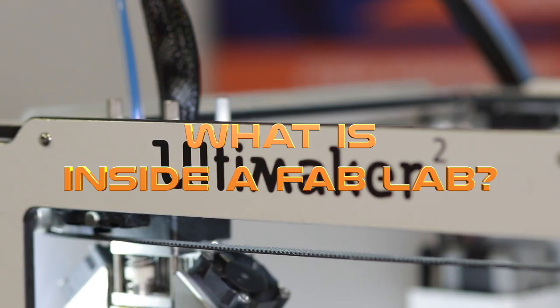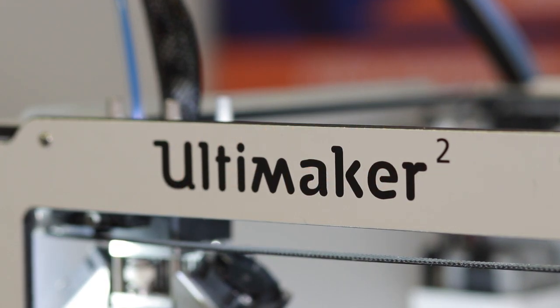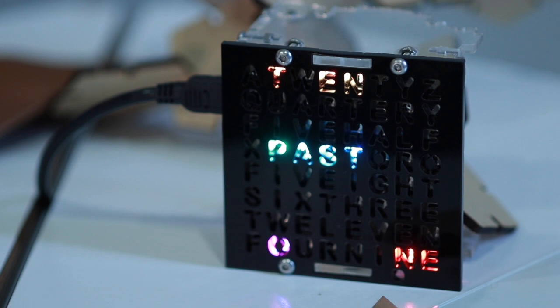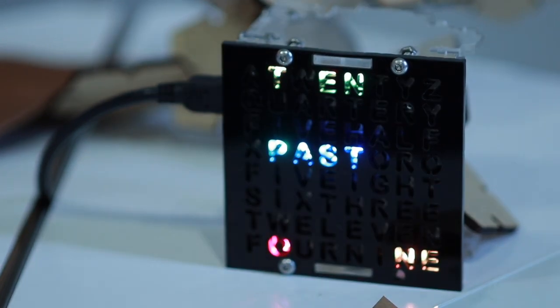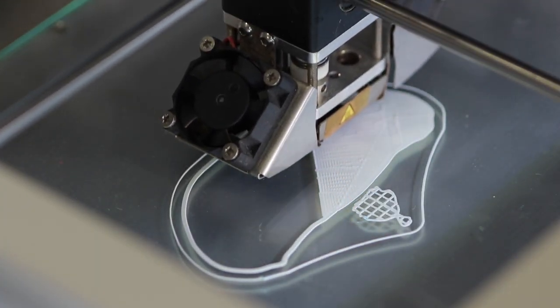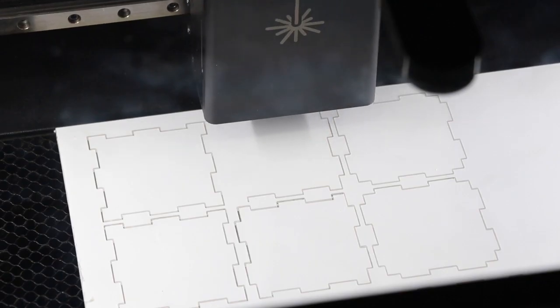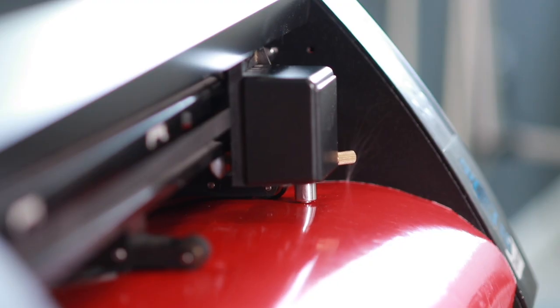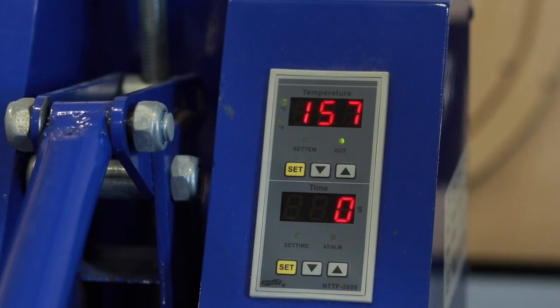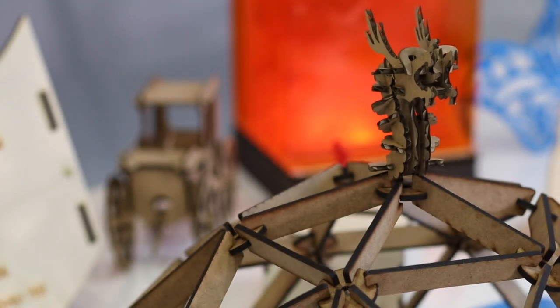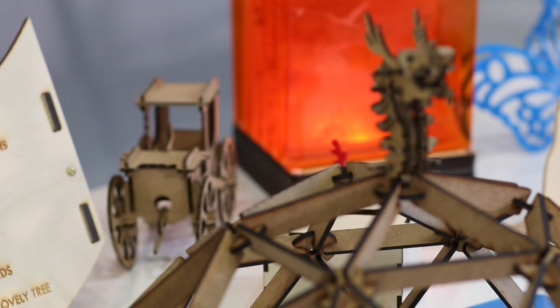FabLabs focus on desktop digital fabrication tools and open source electronics for prototyping and invention. Contained in our mobile FabLab we have 3D printers, a 3D scanner, a 40W CO2 laser cutter, a vinyl cutter and plotter, a heat press and assorted programmable microcontroller boards and robotics kits.